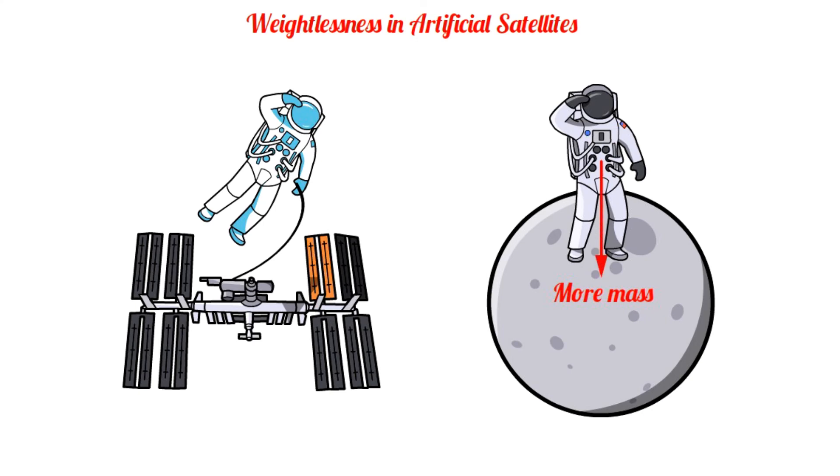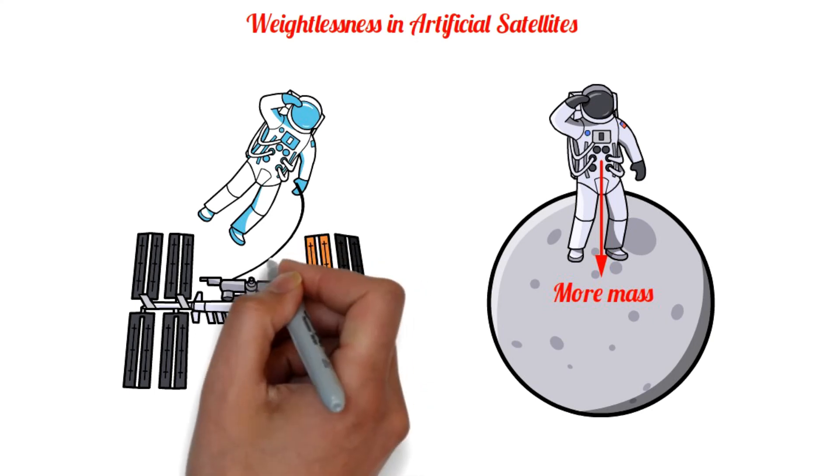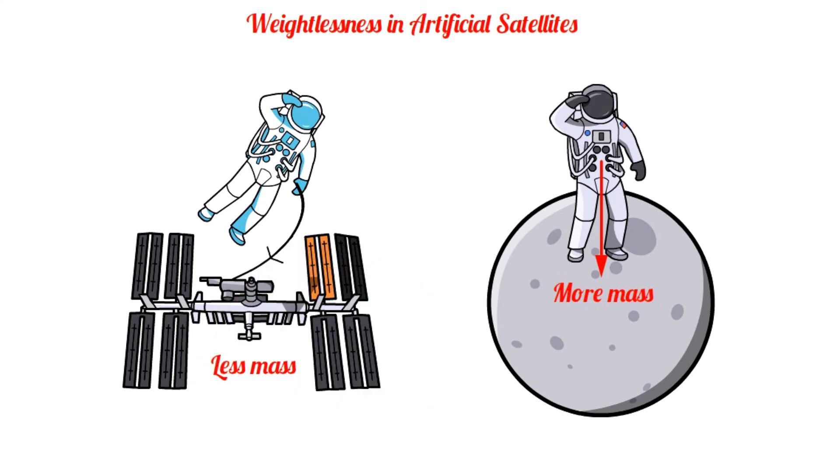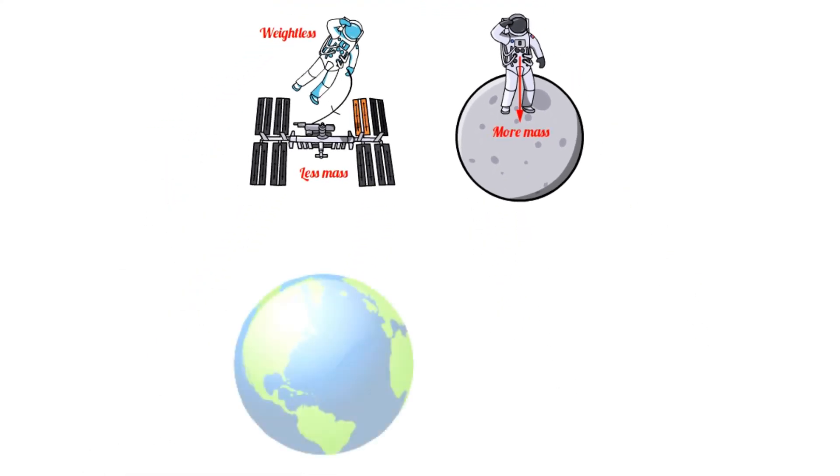In artificial satellites, the mass of the satellite is less, so it exerts less gravitational force on the object, due to which the astronaut feels weightless. But it must be remembered that the attractive force of Earth acting on the artificial satellite or the astronaut inside it can never be zero.